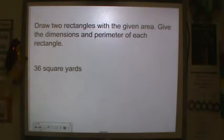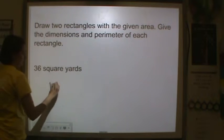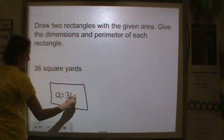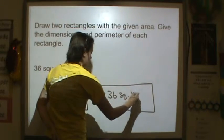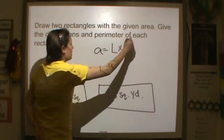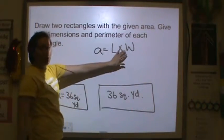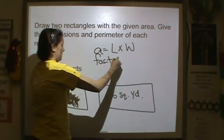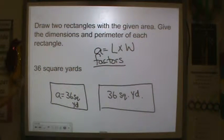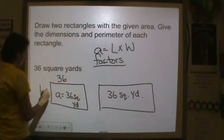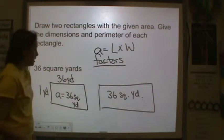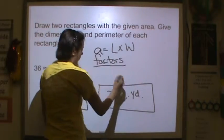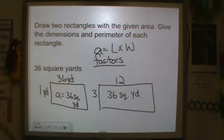All right, so draw two rectangles with the given area. Give the dimensions and the perimeter of each rectangle. So I know my area is 36 square yards. And I have to do two, so I'm going to draw two pictures. Now we know that area is equal to length times the width. So I need to find a length and a width that multiply to get to 36. Sounds like factors, doesn't it? Right? So factors of 36. Well, I could do 1 and 36 yards. 1 times 36 is equal to 36, and that would give me an area of 36 square yards. Another one is 3 and 12. 3 times 12 is equal to 36, so that would work also.